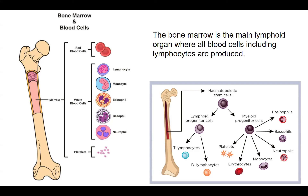Myeloid progenitor cells give rise to platelets, erythrocytes, monocytes, neutrophils, basophils, and eosinophils. Bone marrow is the main lymphoid organ containing a lot of lymphocytes. The second primary lymphoid organ is the thymus. Thymus is quite large in infants — about 70 grams — but as we grow up, it keeps reducing in size, becoming very small at about 3 grams in adults.